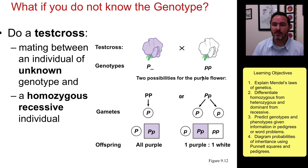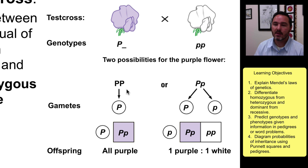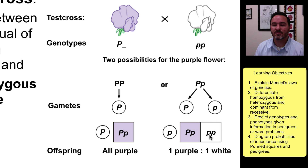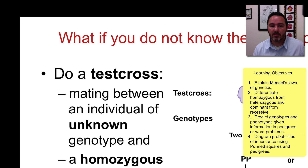Homozygous means the same two alleles; heterozygous is where they're different. If all of the offspring are purple, then I know that this was a big P, big P, because that big P, big P would be combining with the little P, little P's, and all offspring would be big P, little P. However, if about half of the offspring are purple and half are white, then I know immediately that I have a big P, little P parental purple colored pea plant.